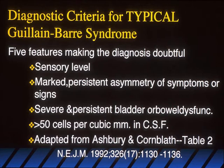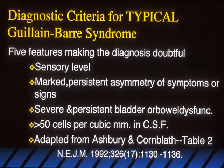This is important. If there's a sensory level, that's not Guillain-Barré — think spinal cord problem. It's usually symmetric, so if primarily one limb, may not be Guillain-Barré. If there's a lot of bowel or bladder problems, think spinal cord. On CSF, expect very high protein — significantly more than 45, which is normal — and very few cells. You should never see a poly, and up to 10 lymphocytes is normal. If you have 50 white cells in the CSF, that's not Guillain-Barré.